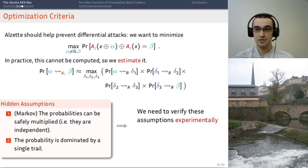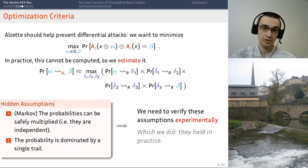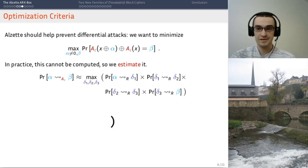Assumptions mean verification. So we need to verify if these hold experimentally. And we have, and they do. To make a long story short, the probabilities are indeed independent. I mean, act as if they were independent. And the probability is indeed dominated by that of a single trail. So, all is well and good. And I can just close the parenthesis. And we have that this approximation is true.